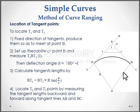Location of tangent points. To locate t1 and t2 tangent points. The following procedure we are going to follow. First point is fixed direction of tangents produce them so as to meet at point B.